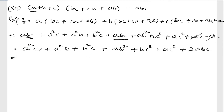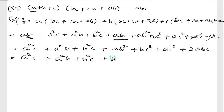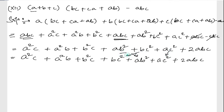Let me rearrange the terms. Writing: a²c + a²b + b²c + bc² + ab² + ac² + 2abc. I'm just exchanging positions to group them more conveniently for factoring.